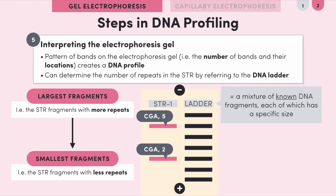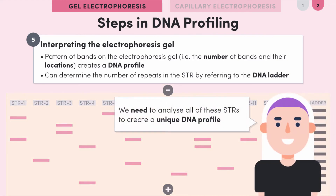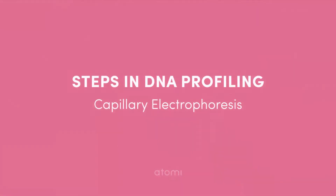Analyzing a single STR obviously isn't going to be enough to make a unique DNA profile, simply because there'd be many people with the same number of repeats for just one STR. In reality a full DNA profile uses 13 STRs, and the result would look something like this — kind of crazy, but hopefully you'll realize how different these can look between different people. We'll look at how to interpret a DNA profile in another lesson. Before then, we need to cover the other kind of DNA profile, which is made using capillary electrophoresis.